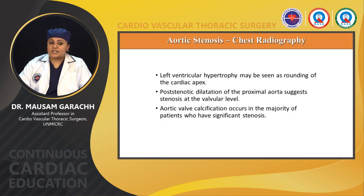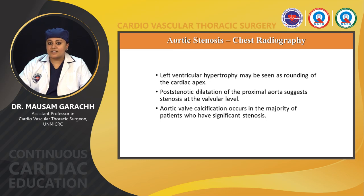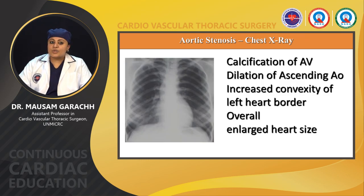On X-ray, left ventricular hypertrophy may be seen as rounding of the cardiac apex. Post-stenotic dilatation of the proximal aorta suggests stenosis at the valvular level. Aortic valve calcification occurs in the majority of patients with significant stenosis. The X-ray shows calcification of the aortic valve, dilated aortic arch, increased convexity of the left heart border, and overall enlarged heart size.